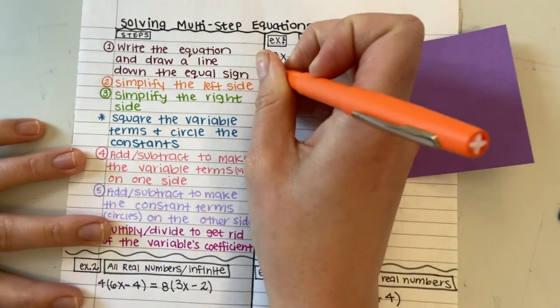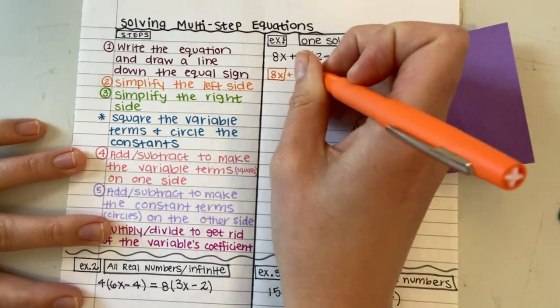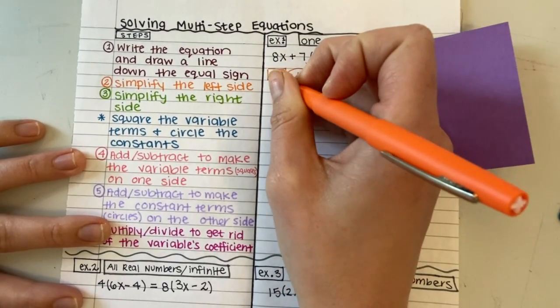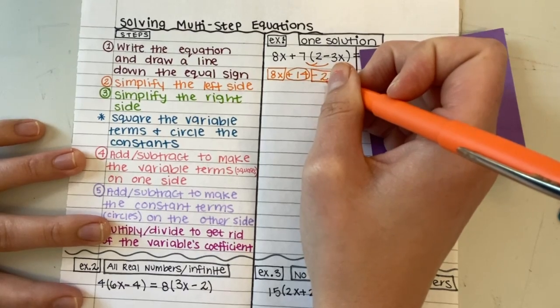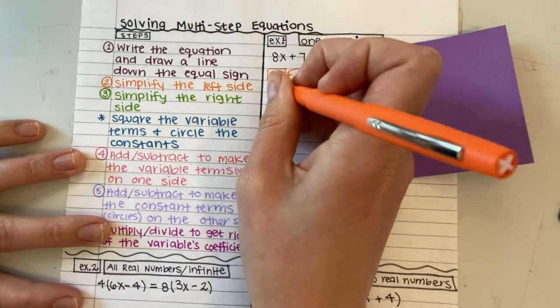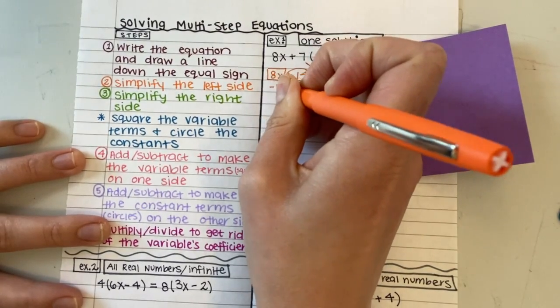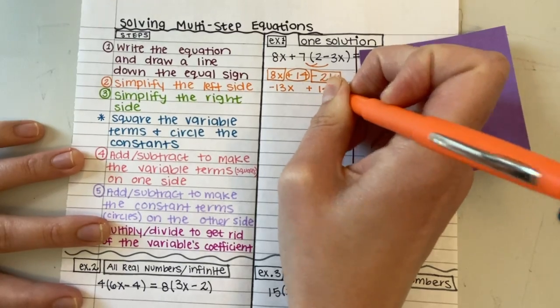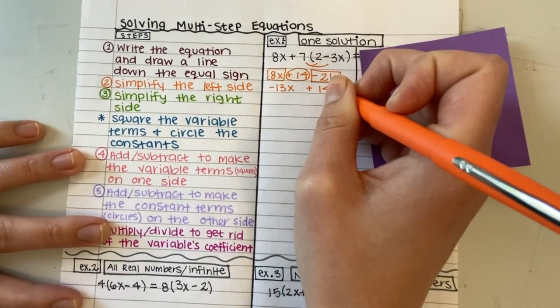I can then combine like terms. I combine 8x with negative 21x and I get negative 13x plus 14. And that's as simple as it can go.